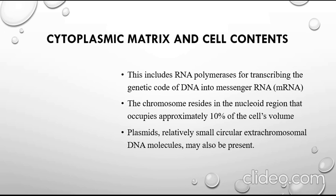The chromosome resides in the nucleoid region, which occupies approximately 10% of the cell volume. This nucleoid region is also known as the nucleus equivalent in prokaryotes, and within it the chromosome is present, overall occupying about 10% of the cell volume.